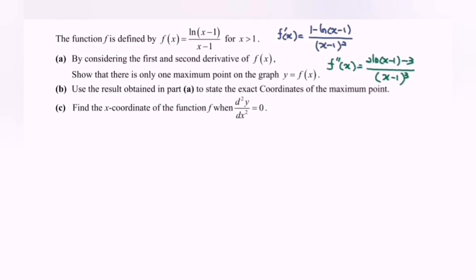Now focus on part b: use the result obtained in part a to state the exact coordinates of the maximum point. From part a, the maximum point is at x = e + 1 and y = e⁻¹, so the maximum point is (e+1, e⁻¹).